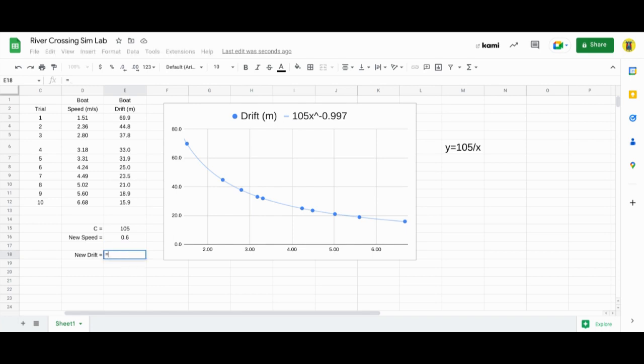So we do the graph constant divided by the new speed. And if the boat were traveling at 0.6 meters per second, that's where it would end up. So we go back to the sim.